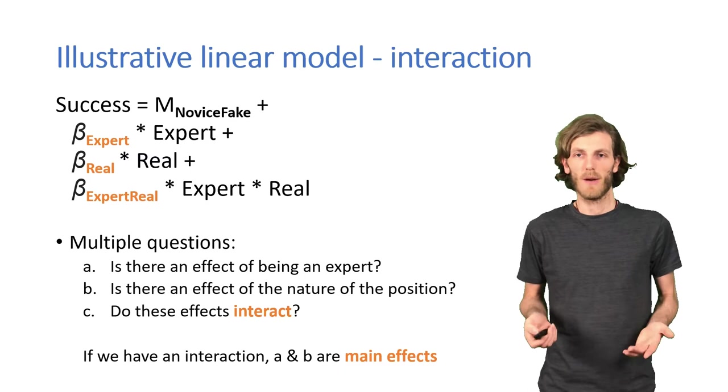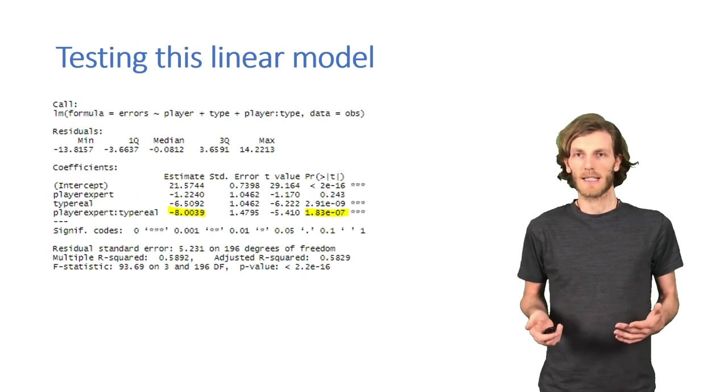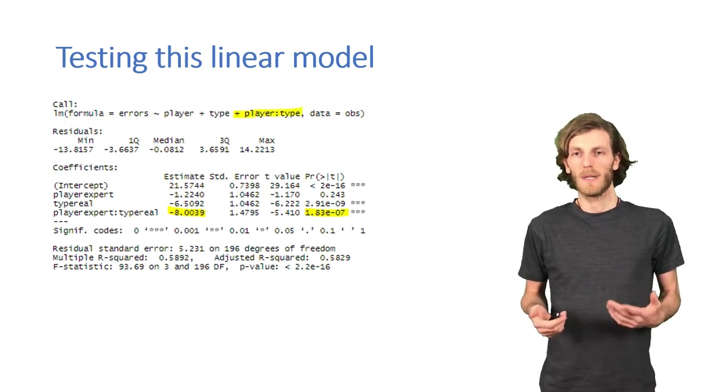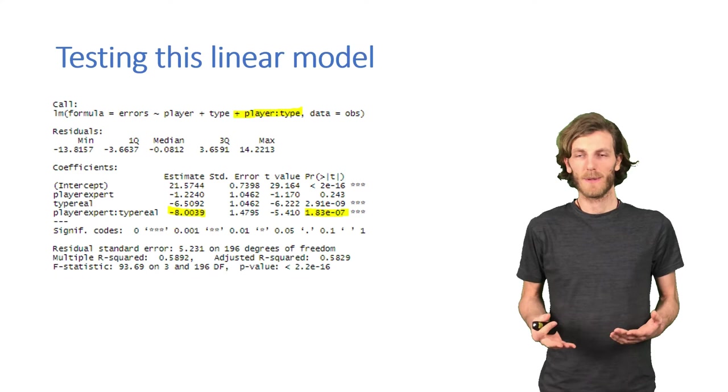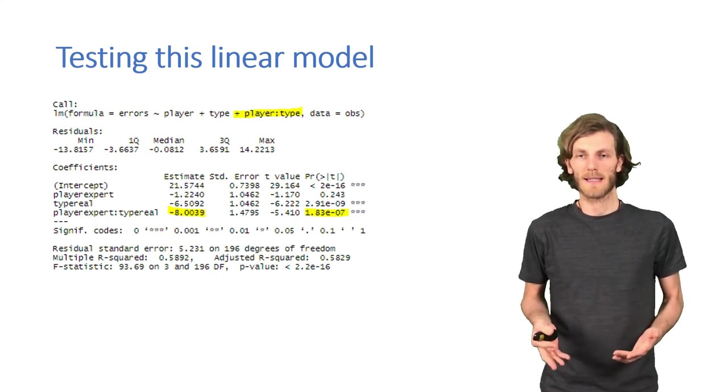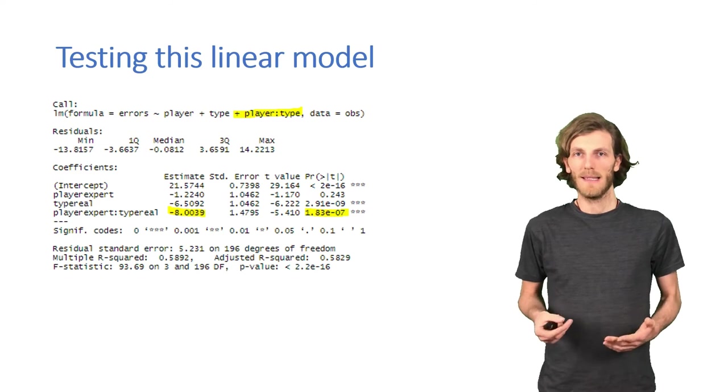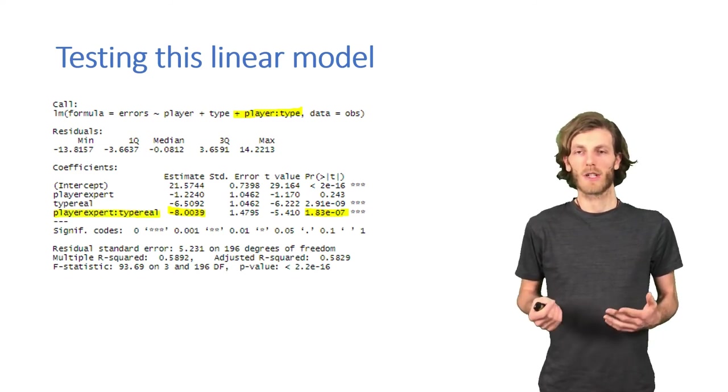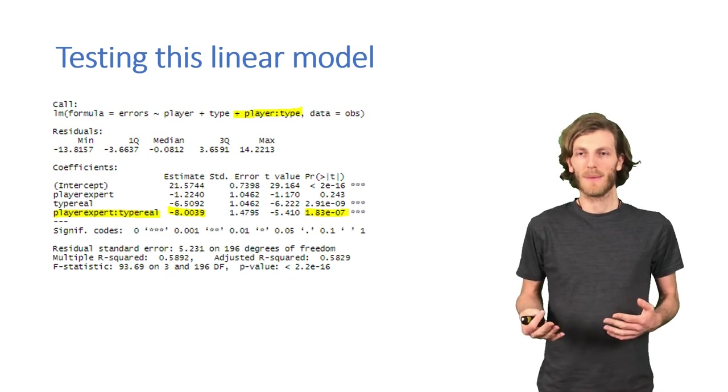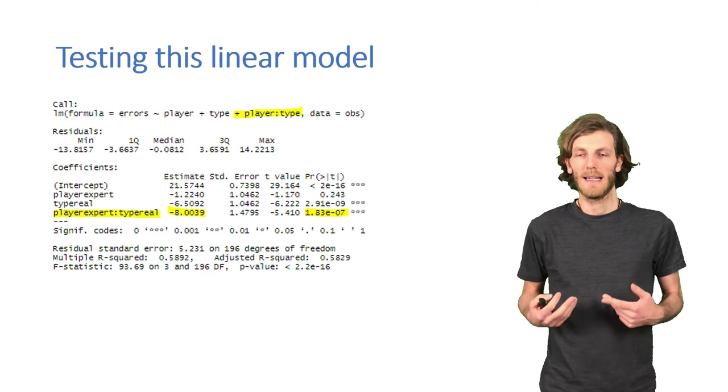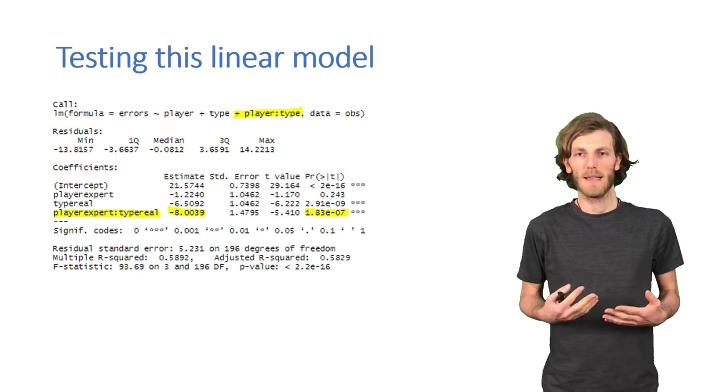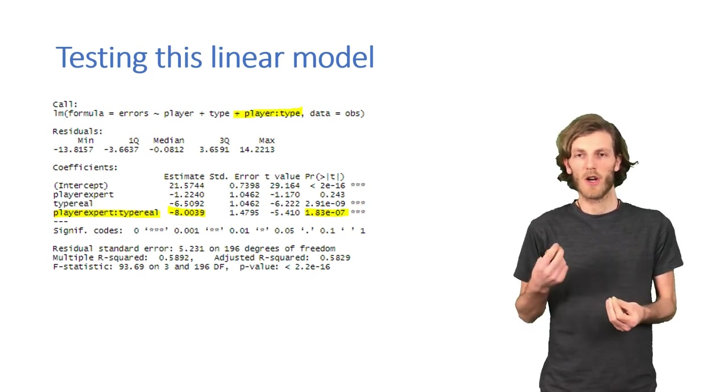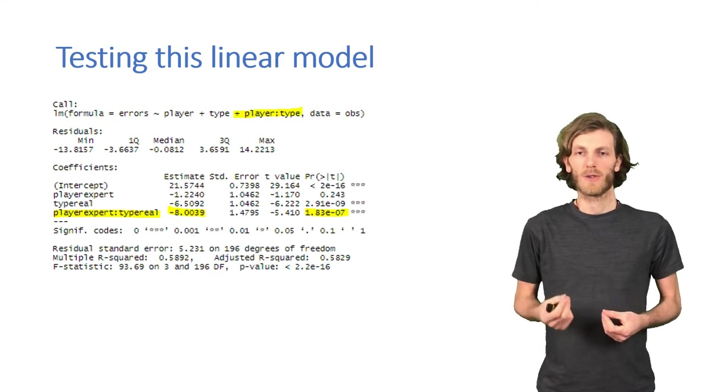And now we can test this with the normal lm function. We just need to add the interaction to the formula, and we do that with a colon between the two variables. So, we have our standard formula, player type, position type, and then we add the interaction between the two. And we can see that, in fact, this interaction now shows up at the last line. It is significant because there is a low p-value, and it has a coefficient that indicates the impact of an expert looking at a true chess position.